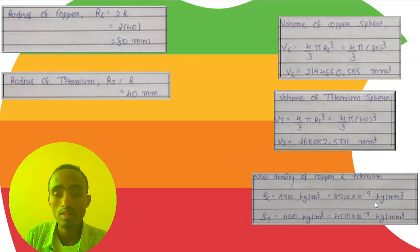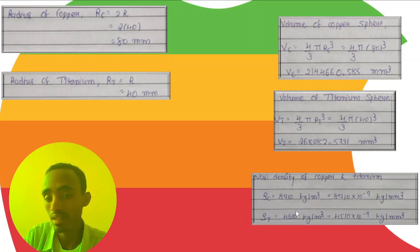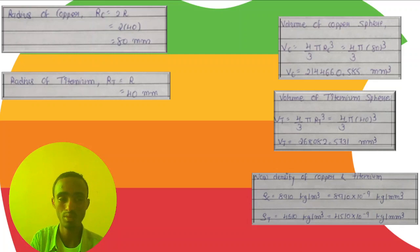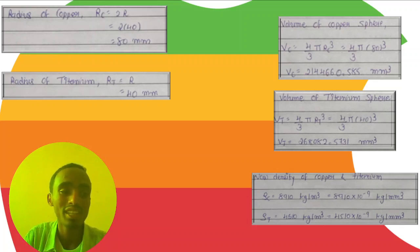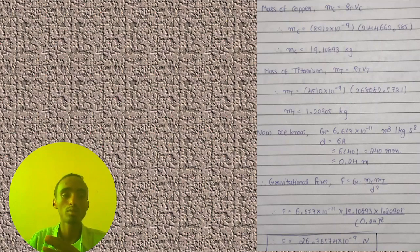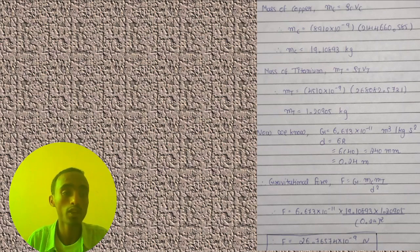We convert the density units into kilograms per millimeter cubed using a conversion factor. Unit conversion is very important to convert from one unit to another and to make our calculations easier. We can then calculate the mass of both the copper sphere and the titanium sphere, since density equals mass over volume.